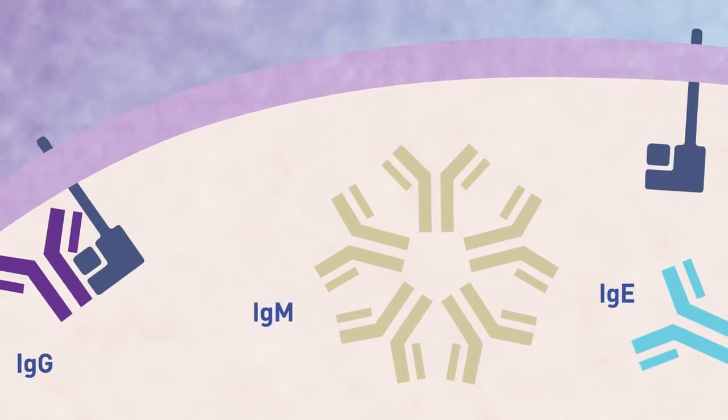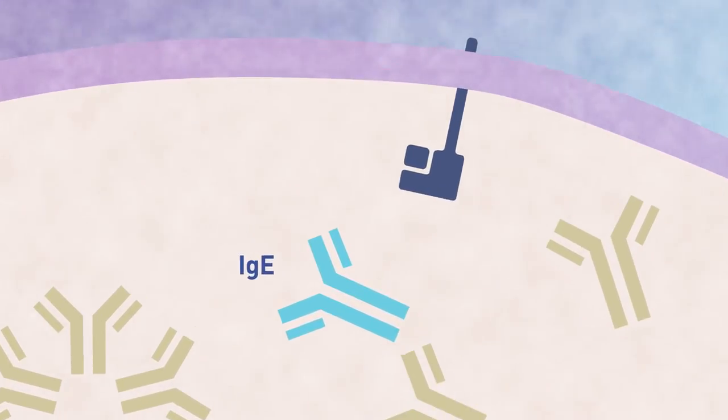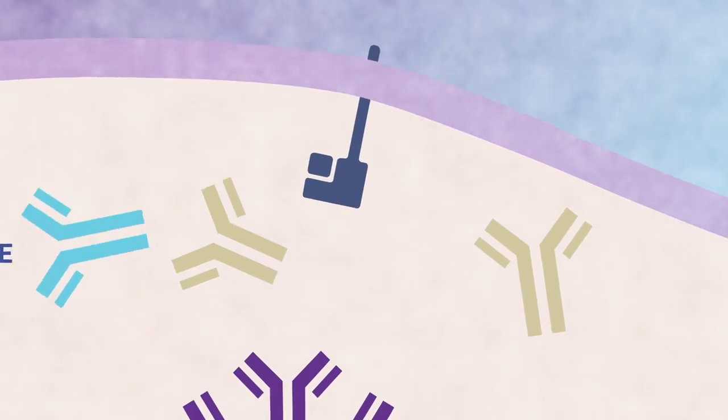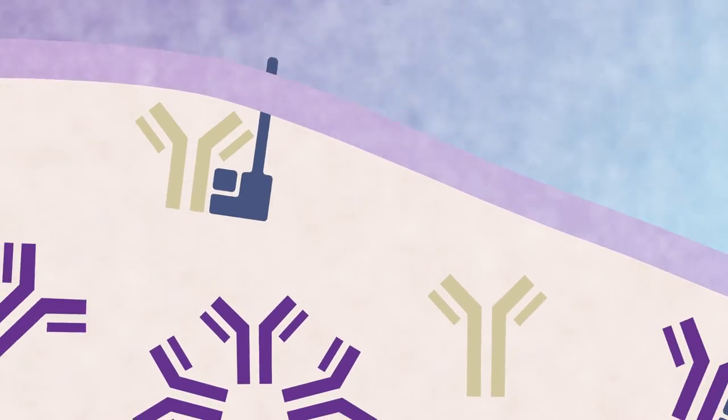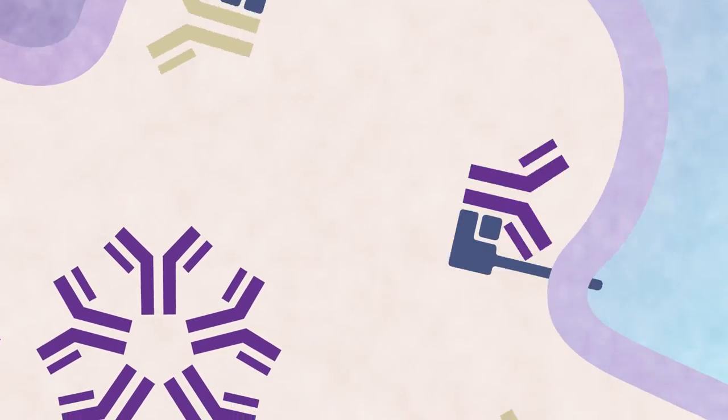the lower pH causes the IgG antibodies — not the IgM or IgE, but the IgG — to bind to FcRn.